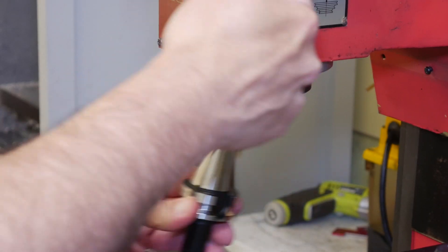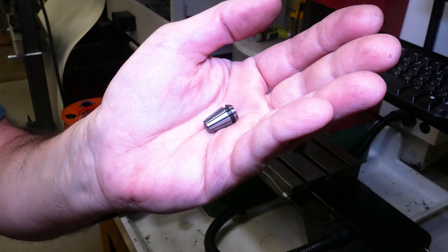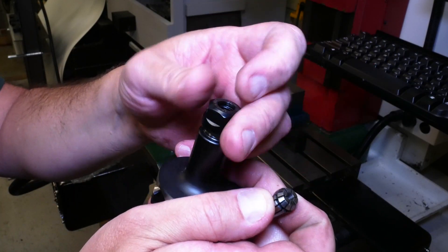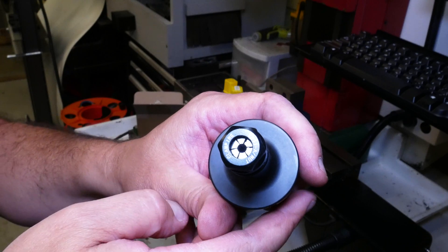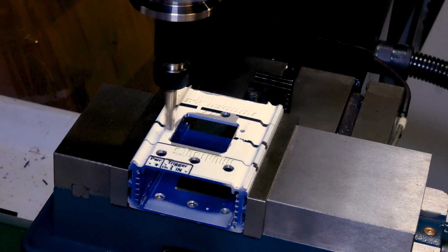The mill uses BT-30 tool holders, and this particular holder uses ER-11 collets. That'll get me up to a quarter inch tooling. I also have some ER-32 holders, which will let me use the larger cutters.